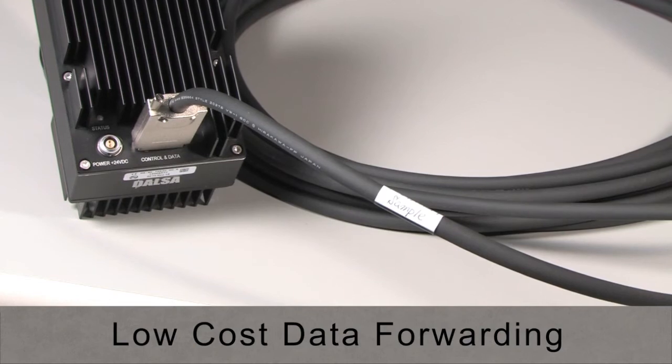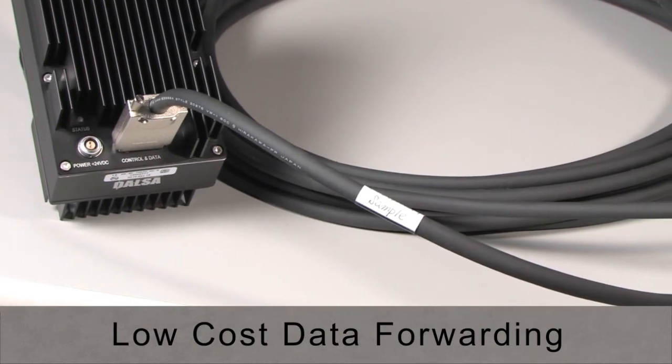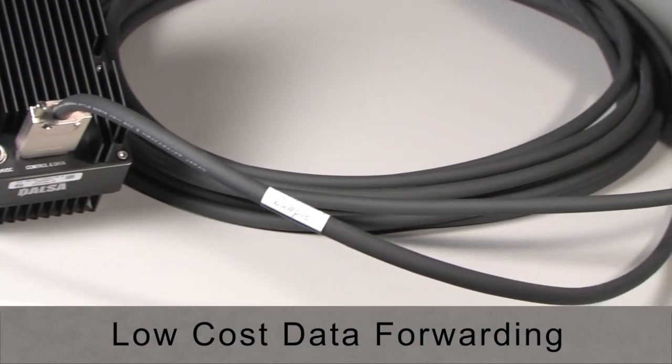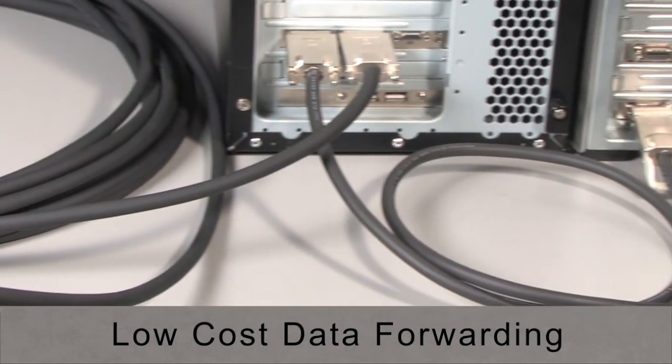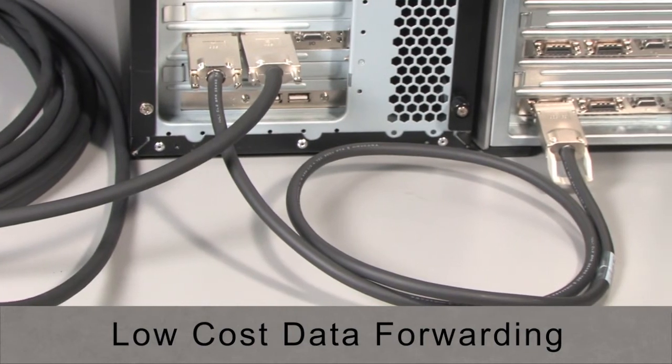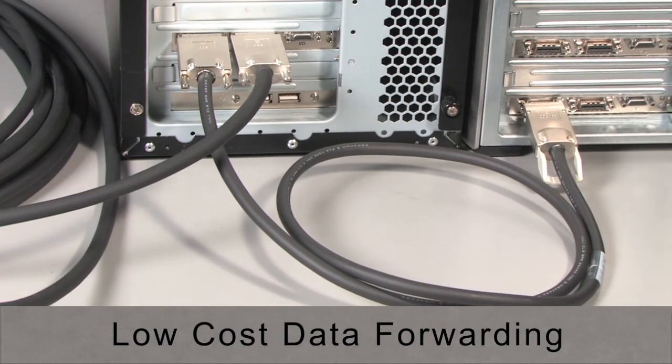We understand that two gigabytes per second is not easy to process, so data forwarding has been designed into the CameraLink HS standard, making use of the unused transmitter portions of the transceiver. This is a low cost addition.